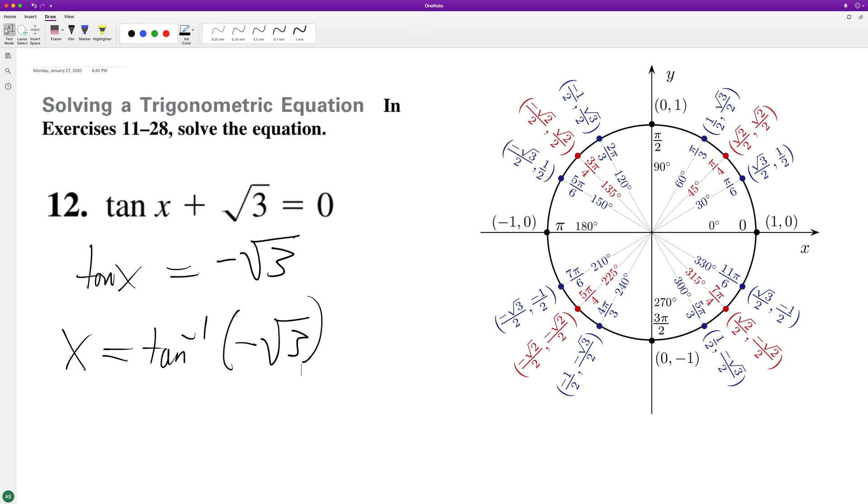And where is tangent equal to that? Or I should say tangent is only valid from negative π over 2 to π over 2. There negative root 3.